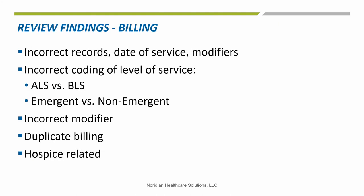Audit findings and billing: audits were done and some face-to-face education was done, but the results show that the problems were incorrect records, dates of service, and modifiers; also incorrect coding level of service — ALS versus BLS, emergent versus non-emergent — incorrect modifier, duplicate billing, and hospice-related issues.